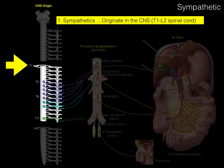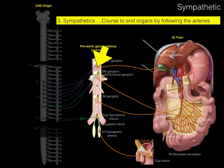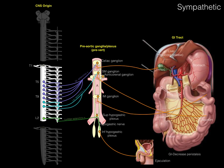In review of the sympathetic nervous system: number one, sympathetics originate in the CNS between T1 and L2 spinal cord levels. Number two, sympathetics course to pre-aortic ganglia via splanchnic nerves — greater splanchnic, lesser splanchnic, least splanchnic, lumbar splanchnics, and so forth. Number three, sympathetics course to end organs by following arteries, like Christmas lights around a Christmas tree branch. Number four, the postganglionic sympathetic neuron synapses via epinephrine to adrenergic receptors — this is where most drugs act.